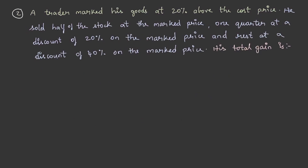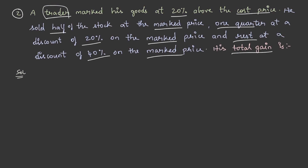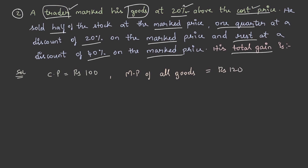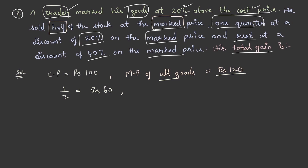A trader marked his goods at twenty percent above the cost price. He sold half the stock at the marked price, one quarter at a discount of twenty percent on the marked price, and the rest at a discount of forty percent on the marked price. What is his total gain? Let cost price equal rupees 100. The marked price is 100 + 20% = rupees 120. Half the stock is worth rupees 60, and one quarter is rupees 30.